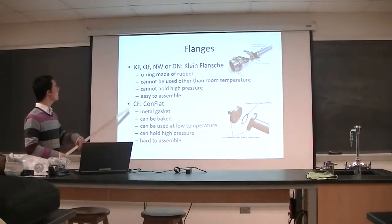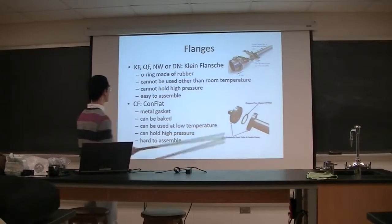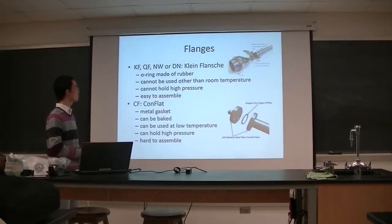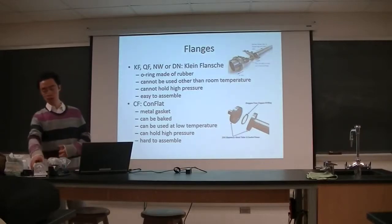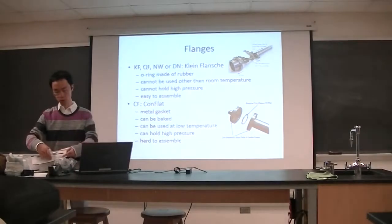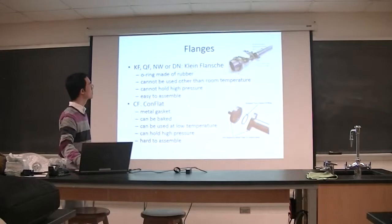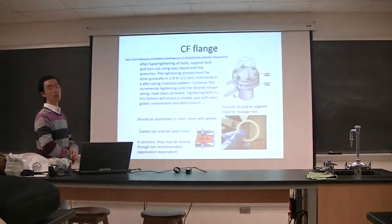For the CF flange, we use a metal gasket. It can be baked — meaning heated to a high temperature — and it can also be used at low temperature. It can hold very high pressure. However, it is very hard to assemble: you need to put in a lot of screws and tighten them. We are going to use the CF flange a lot.